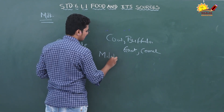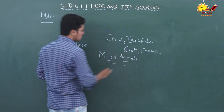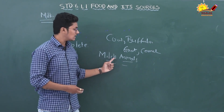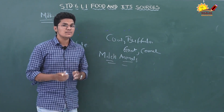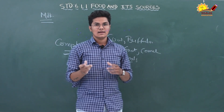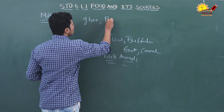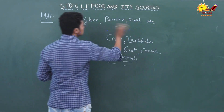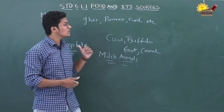The animals that give us milk are known as milk animals — remember this, it is important for exams. We use many products that are made from milk in our everyday life. There are so many products made from milk; ice creams are also made from milk, so milk is a very essential part of our food source.